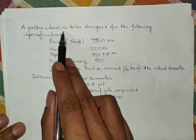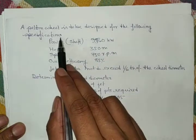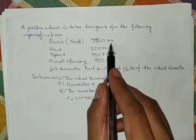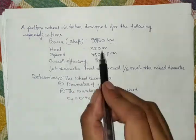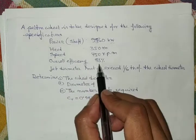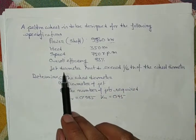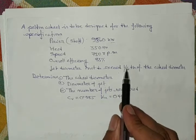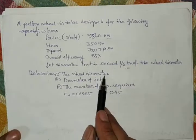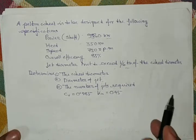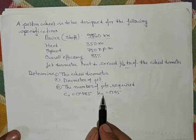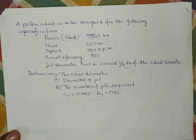Now let's solve another problem. A Pelton wheel is to be designed with: shaft power P = 9560 kW, net head H = 350 m, speed N = 750 rpm, overall efficiency = 85%, jet diameter not to exceed 1/6 of the wheel diameter. Cv = 0.985 and speed ratio Ku = 0.45. Determine wheel diameter, jet diameter, and number of jets.